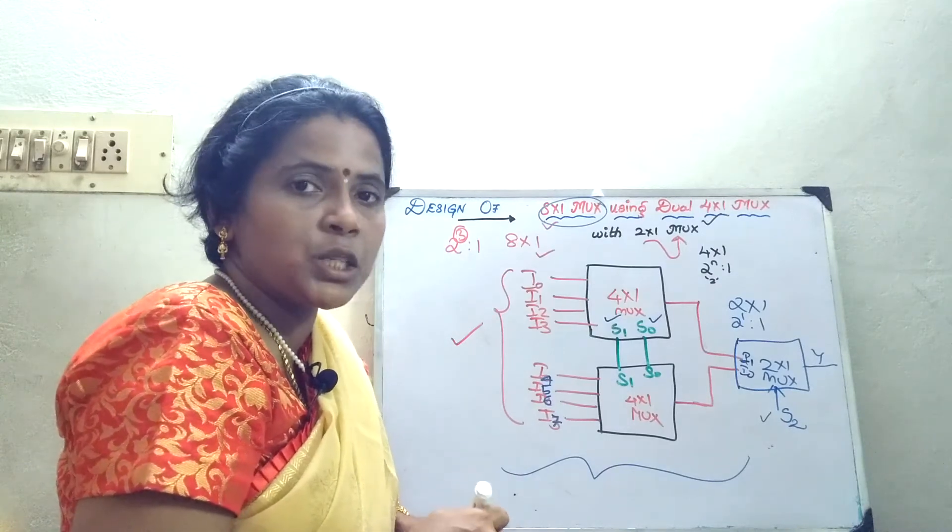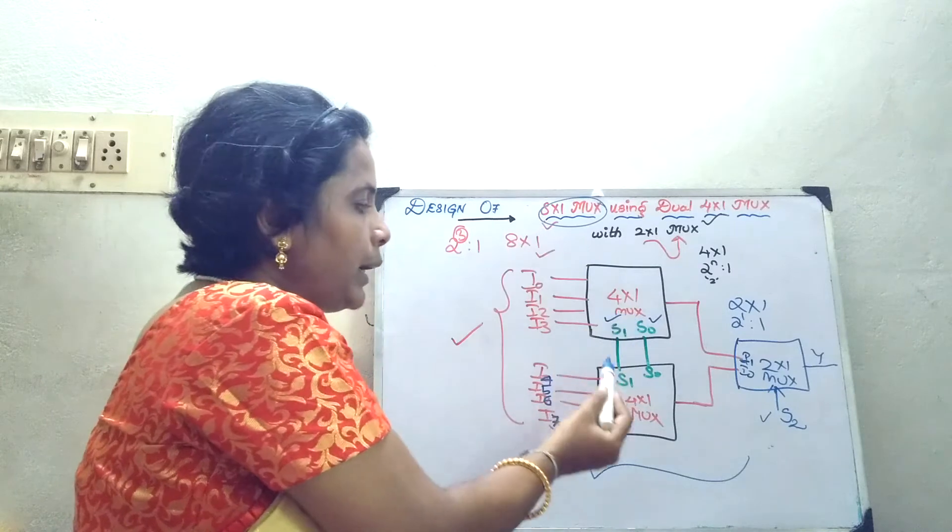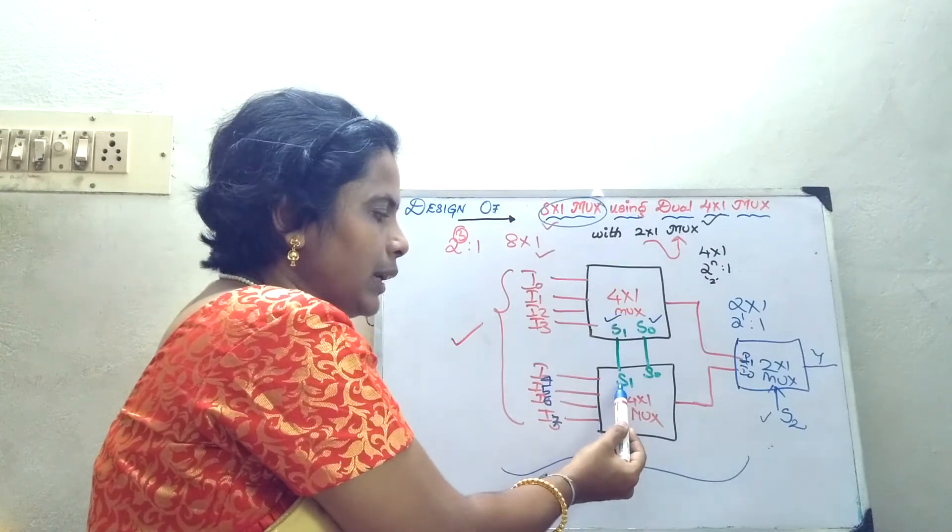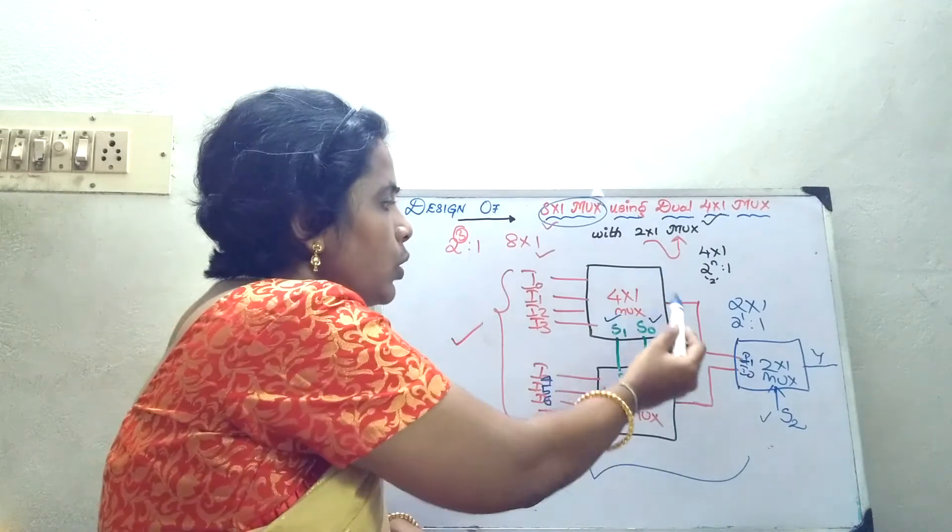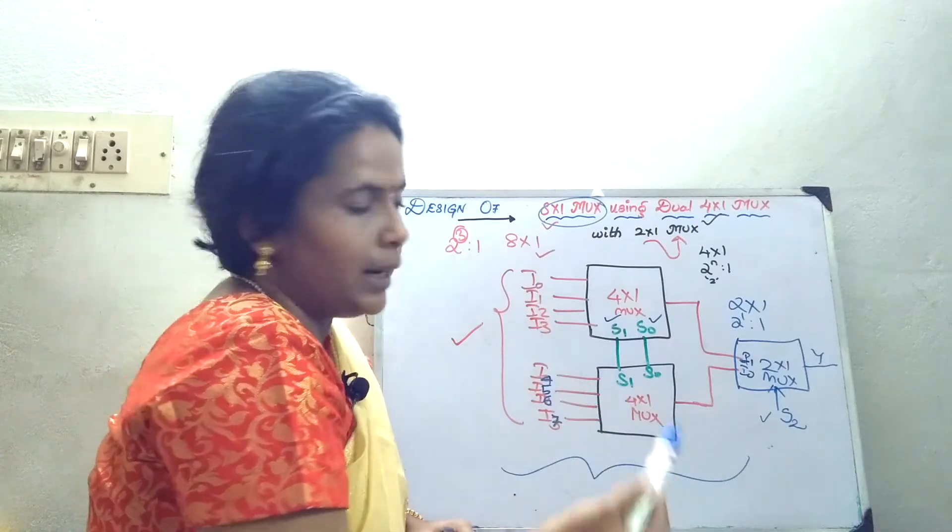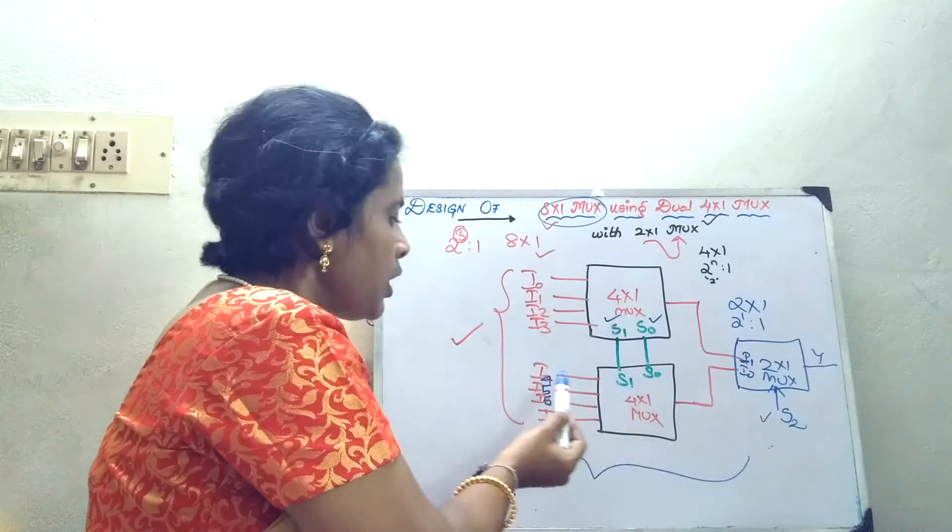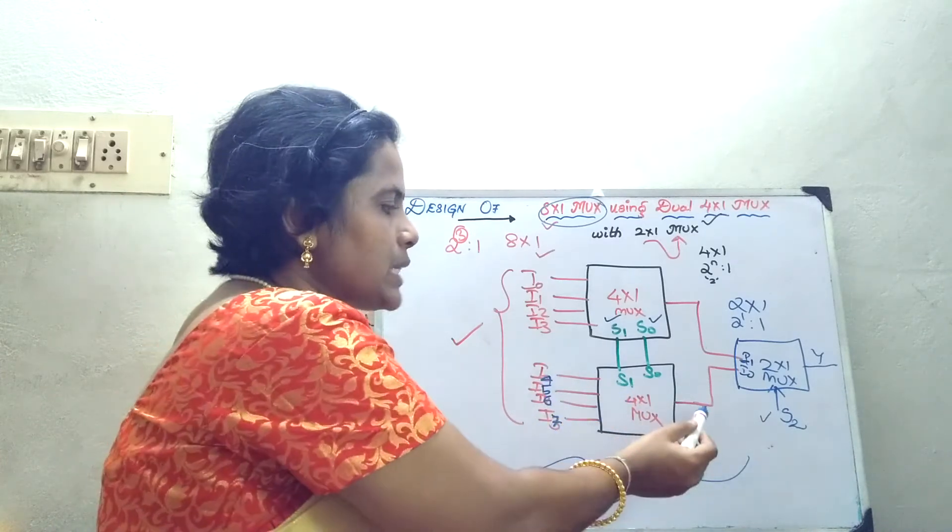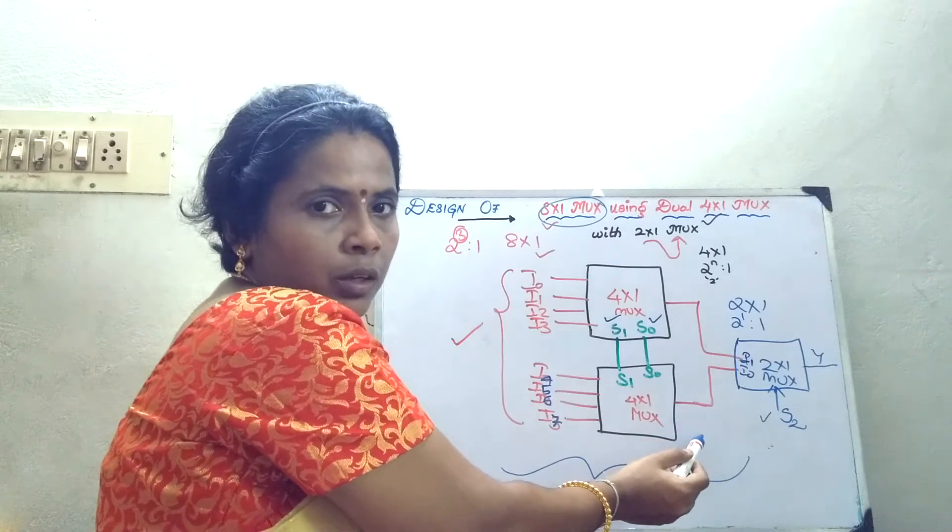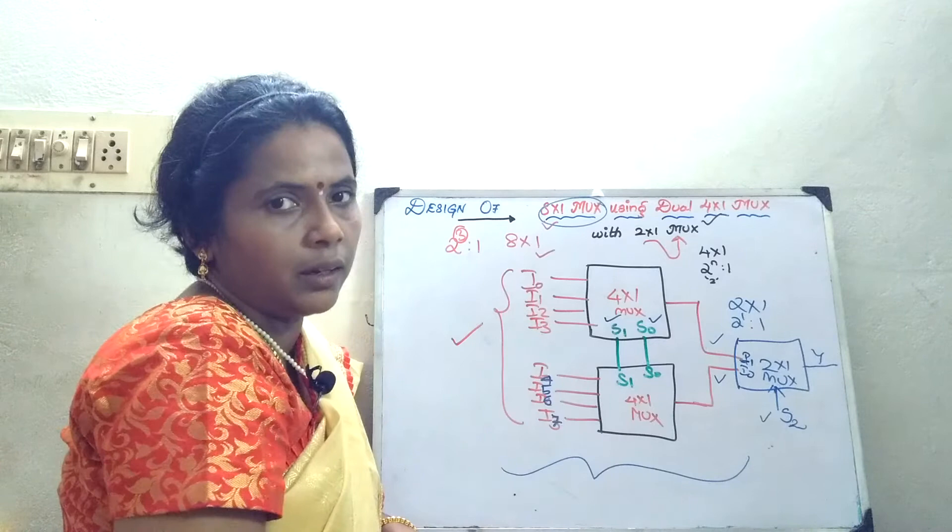So now what is the condition? Whenever I am going to just consider this circuit alone, depending upon the select lines, 2 select lines S naught and S1, data that is from I naught to I3, any one of the data will be activated. Similarly, here also based on the control signals given here, any of the data from I4 to I7 will be selected here. Now I have two datas, one data here and one data here.